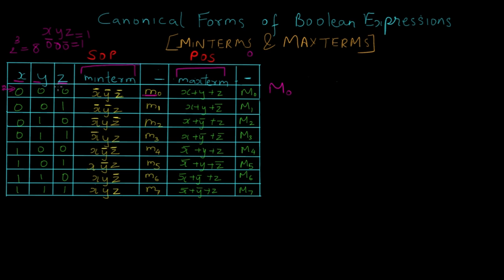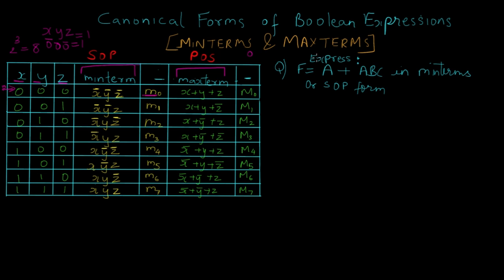So how do you express these boolean expressions in min terms and max terms form? Let's take an example. I have written a question wherein they have given a boolean function equal to a, or abc, and we need to express it in min terms or SOP form. In the previous tutorial where we understood the concept of sum of products, we saw that in order to apply further processing we need to first convert this equation into a proper standard form — that is a standard sum of product form. We need to have the b and c component in this first term.